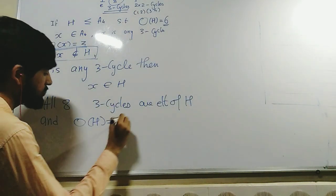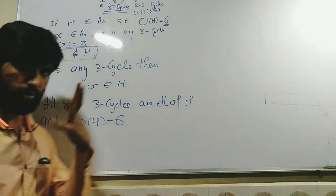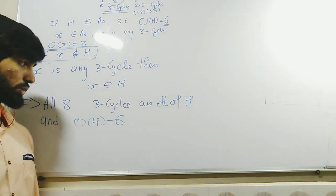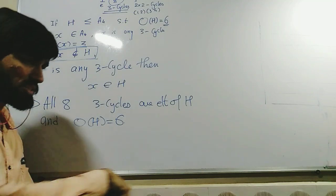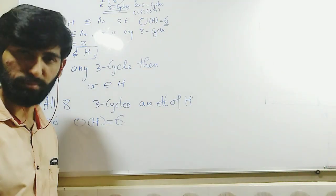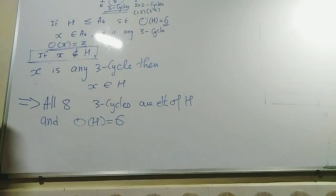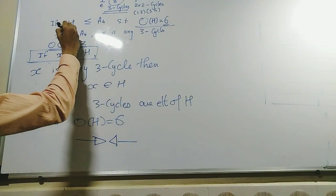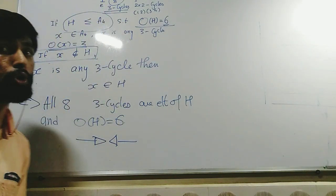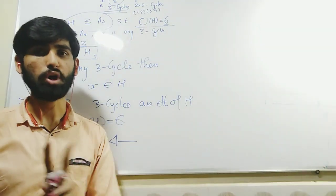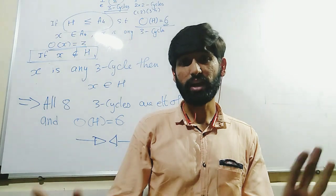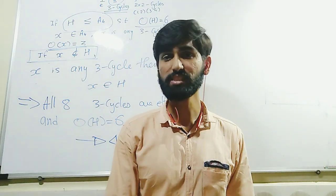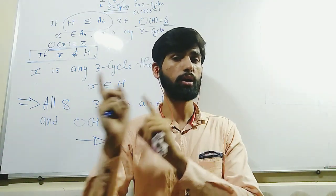But the order of H is 6. I am telling you the order of H is 6, yet I can give you 8 elements of that group. There are places for only 6 elements and you are trying to put 8 inside — this is a contradiction to the order of H being 6. Hence our assumption that H is a subgroup of A4 is wrong. That means there does not exist any subgroup of A4 which is of order 6. Hence, the converse of Lagrange's theorem is not true.